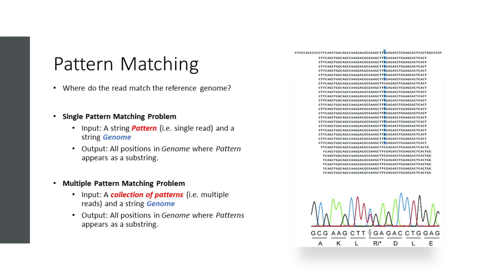We're going to focus on a simpler question that will help us generalize the problem: where do the reads match the reference genome exactly? If we can answer this question, we can generalize it further. If we're given a single read, we consider it as a string pattern and compare it with a larger string, which is the genome. The challenge is to figure out which positions that pattern matches the genome as a substring. All we're doing then is generalizing this to multiple reads — finding, given a collection of patterns, where those patterns match exactly in the larger genome.